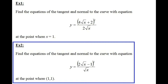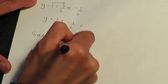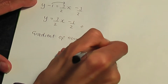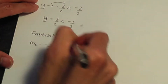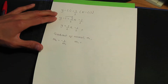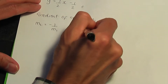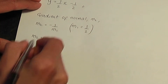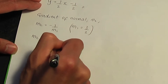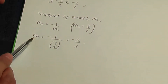We also need to find the equation of the normal. The gradient of the normal, m2, equals -1/m1. Since m1 = 3/2, we get m2 = -1 / (3/2) = -2/3. So -2/3 is the gradient of the normal.